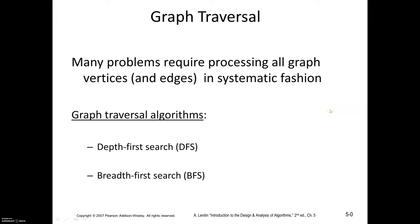Graph traversal algorithms — depth first and breadth first search — are both examples of decrease and conquer. Graph traversal means you are required to process all the vertices and edges of the graph in a systematic fashion. Because a graph is a non-linear data structure, you cannot process the vertices in sequential order, so some systematic way of processing the vertices is required. One such algorithm is the depth first search algorithm.